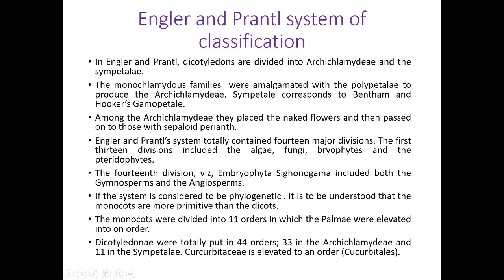If the system is considered to be phylogenetic, it is understood that the monocots stand as a primitive group compared to the dicots, because dicot plants, as per Engler and Prantl, show evolutionary and advanced characters. Engler and Prantl divided monocots into 11 orders, in which the Palmae were elevated into an order. The dicotyledonae class was put into 44 orders total: 33 in Archichlamydeae and 11 in Sympetalae. Cucurbitaceae is elevated to an order, Cucurbitales.